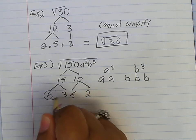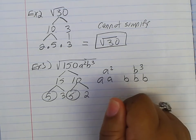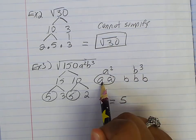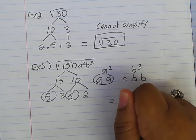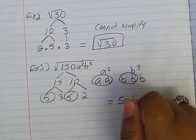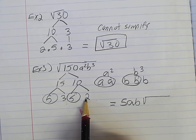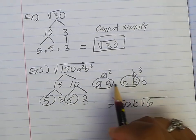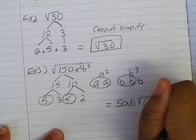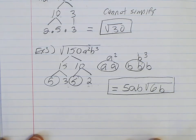Now I come through and find things that are the same. I have two fives — I can pull out a 5. I only have one 3 and one 2, so I just pull out the 5. For the letters: I have two a's so I can pull out an a. I have two b's so I can pull out a b. Then in the radical, whatever's left gets multiplied back together: 3 times 2 is 6. No a's are left, but there is one b remaining. Final answer: 5ab√(6b).